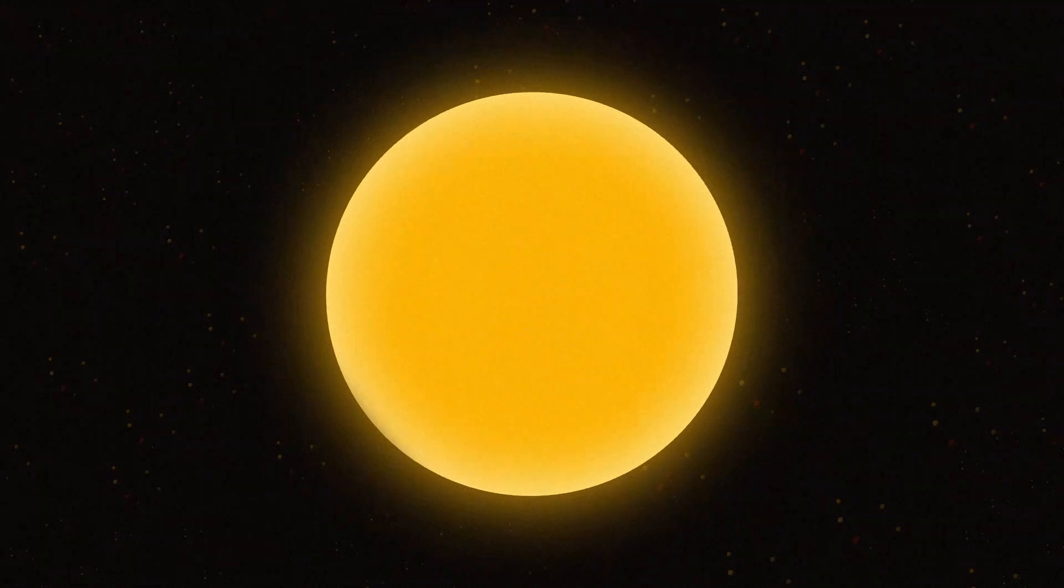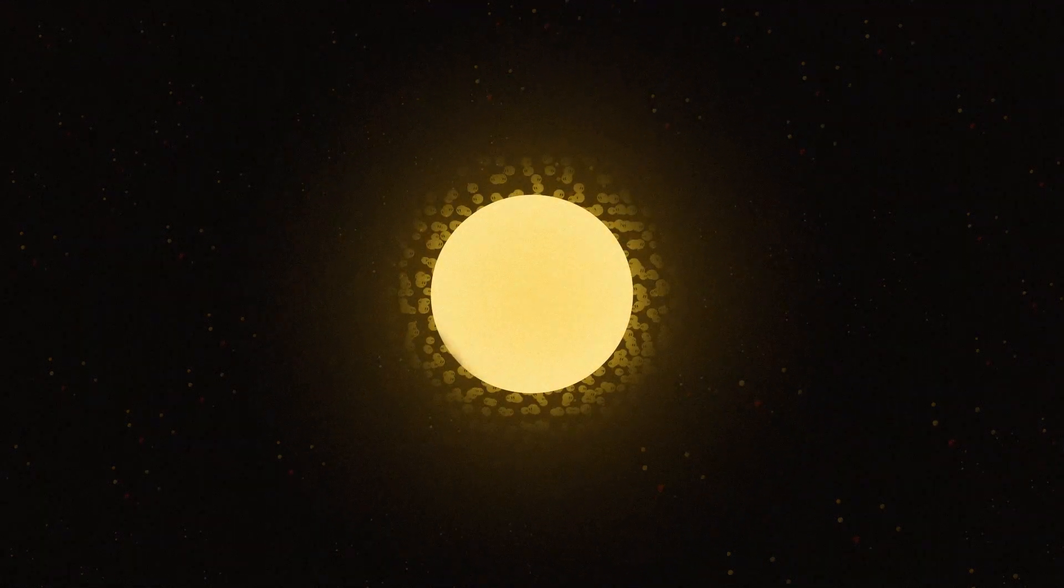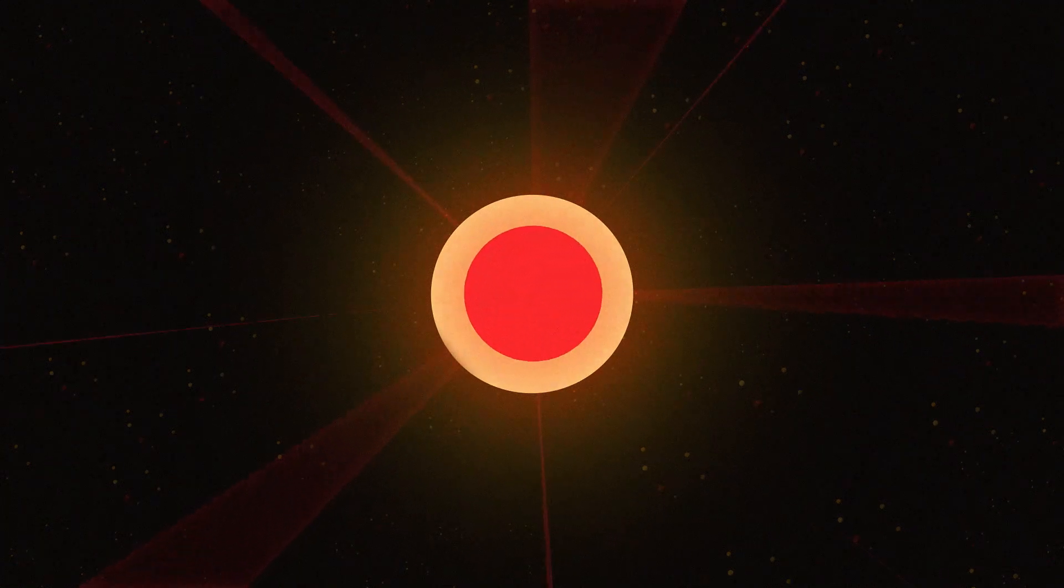Once the core runs out of fuel, it will collapse under the weight of its own gravity. Nuclear reactions will occur on the surface of the sun, burning the hydrogen shell that surrounds the core. As a result, the star will expand and produce a red glow, turning into a red giant.